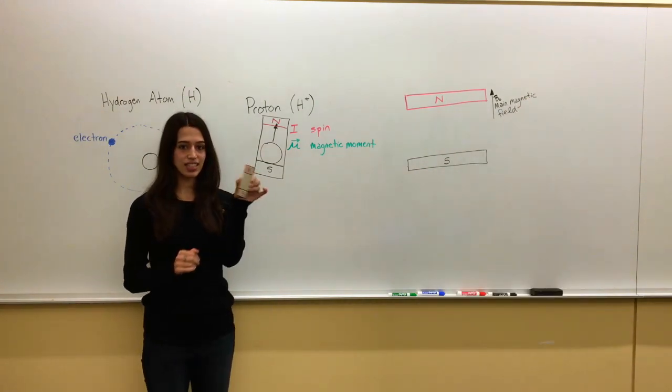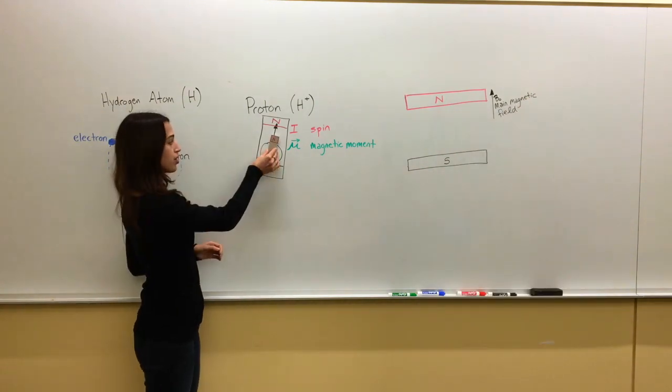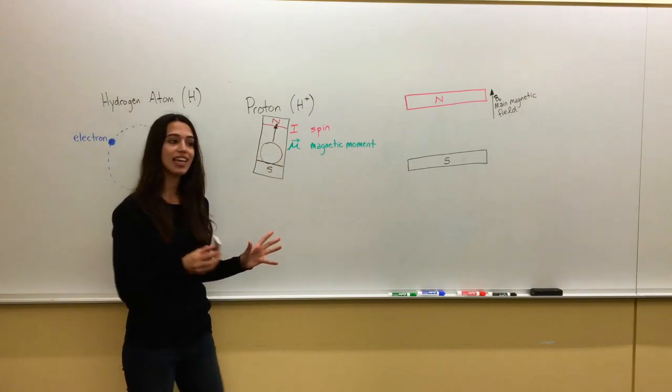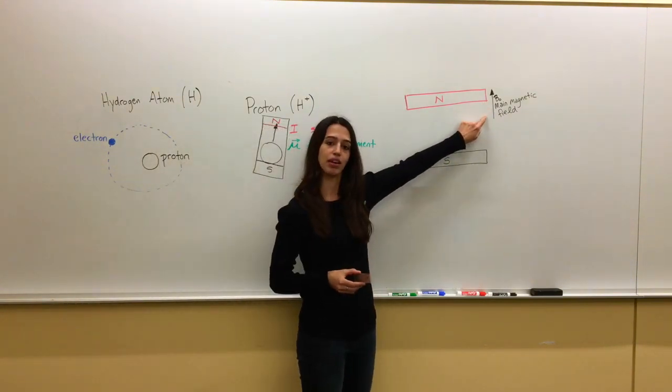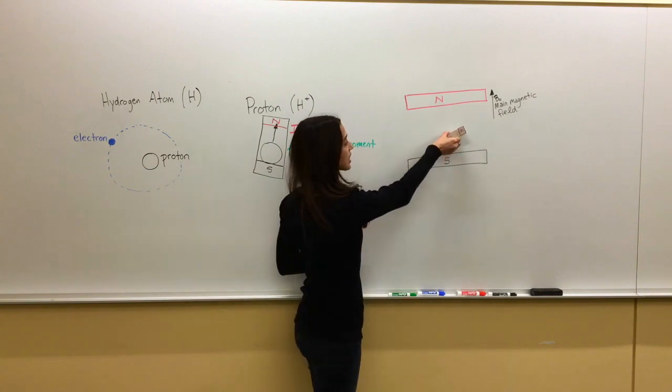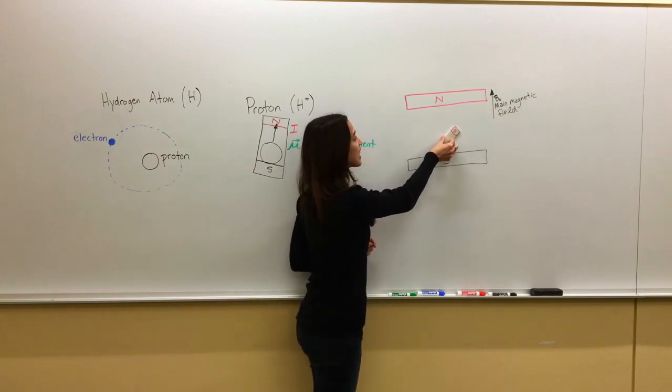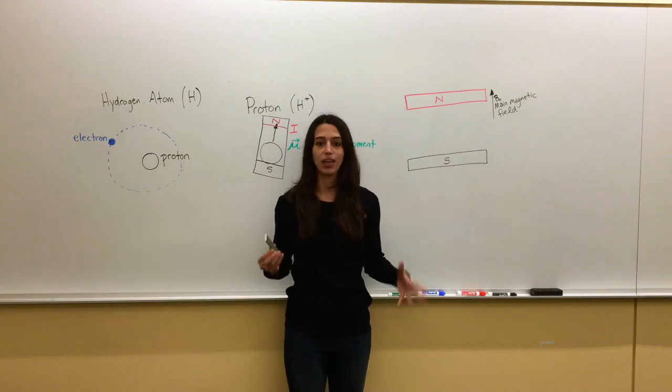So now we have this little teeny tiny bar magnet that we're thinking of our proton as, and when we put it in a big magnetic field like this one, let's call it B0, our main magnetic field pointing up, it's going to do what any magnet does. It's going to tend to align with it.